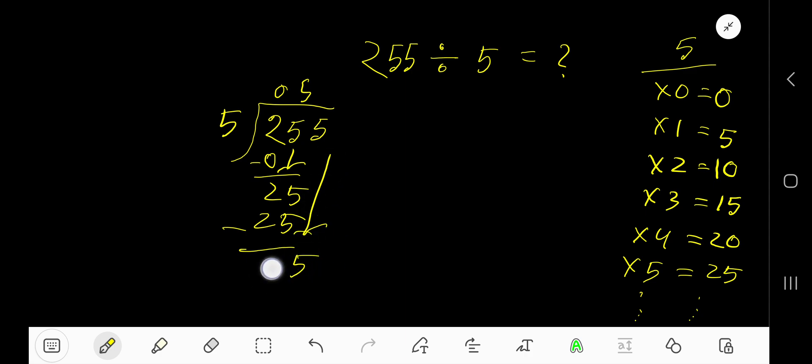5 goes into 5 how many times? 5 goes into 5 one time. So 1 times 5 is 5. Subtract to get 0. Since our remainder is 0, we are done. So 51 is our answer.